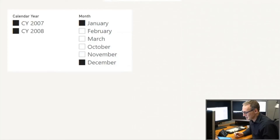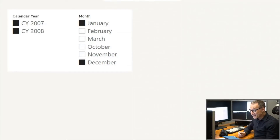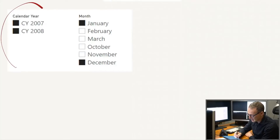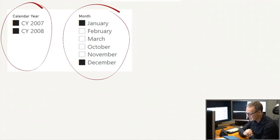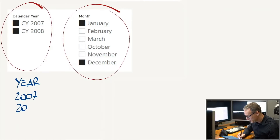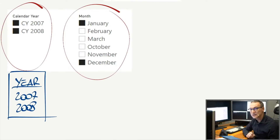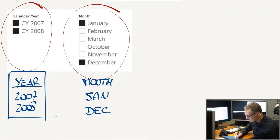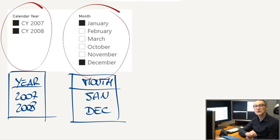Let me draw some details about that. We need to start with two filters on two different columns, and this is exactly what I have here. I have one slicer that is filtering the year and another slicer that is filtering the month. Now these two slicers place filters in the filter context. The first slicer applies a filter on the year column and filters 2007 and 2008. The same happens for the month — I have the month column for which I selected January and December. Another filter placed in the filter context.